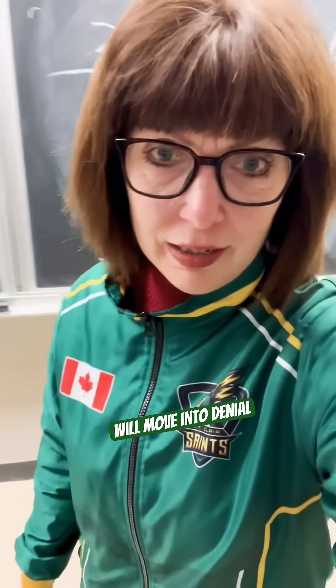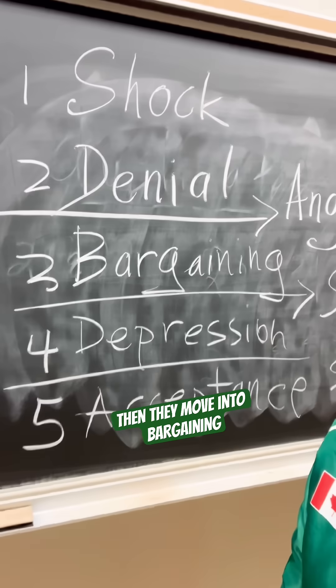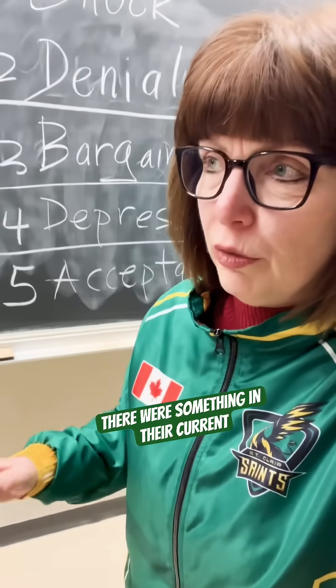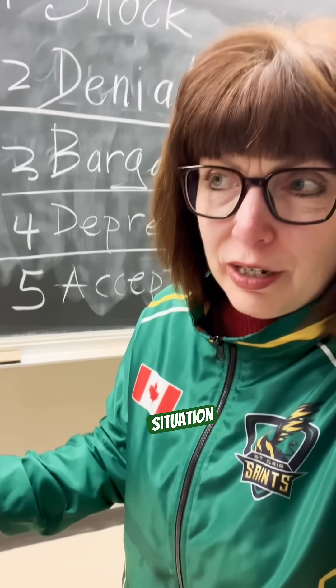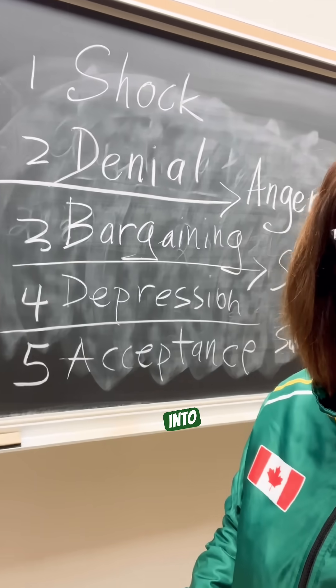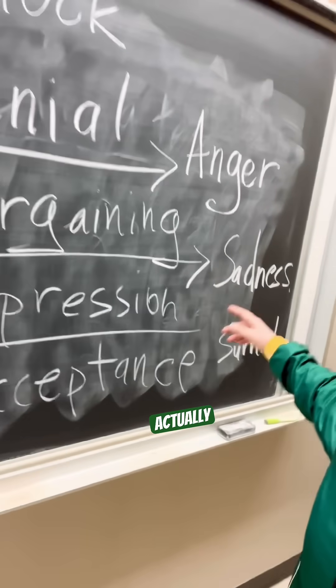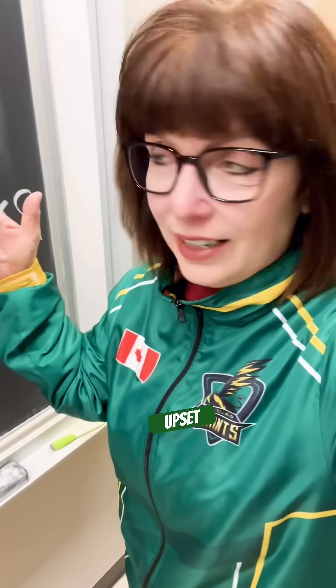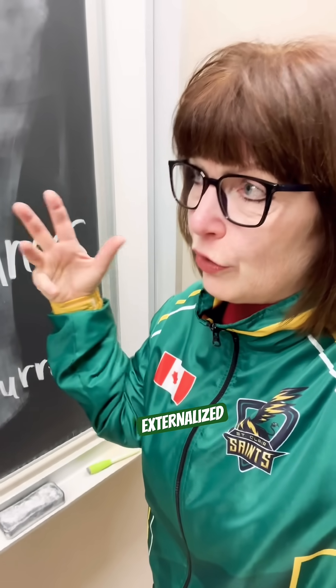Then someone will move into denial, where they disassociate and have a hard time accepting where they are. After that comes bargaining — the idea of 'if only I'd done this,' or 'if I could go back in time,' or 'if there were something in my current situation I could change.' But this is reality, and it's a new reality for them. Then, actually before depression, we have anger — anger is just being upset. I always think of anger as externalized depression.